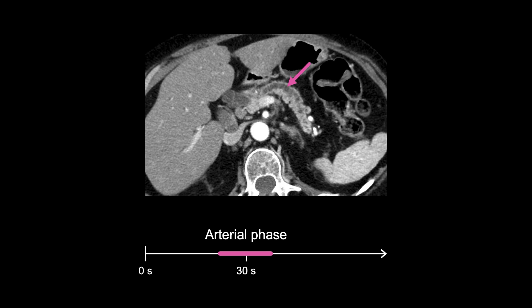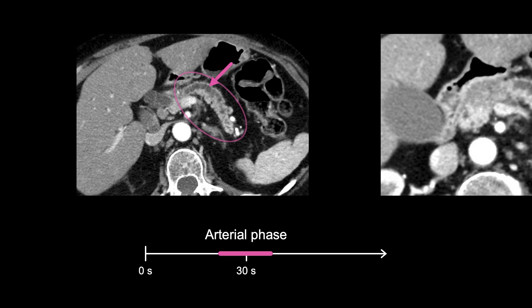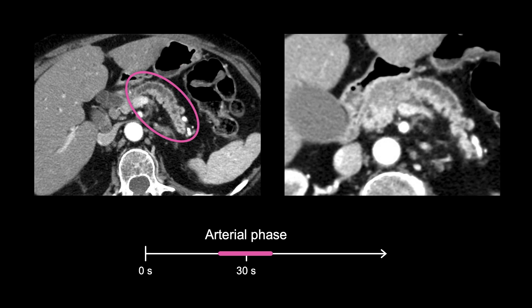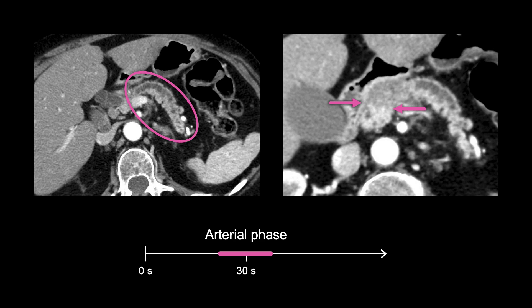If we zoom in, you can see a relatively subtle boundary between the pancreas tissue and the mass, which has decreased enhancement. On the other side, the dilated duct leads right into the mass, helping to identify the boundary.